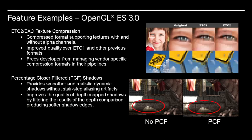Let's cover some practical examples for version 3 of the OpenGL ES API. First, it added ETC2 and EAC texture compression — a compressed format supporting textures with and without alpha channels. It has improved quality over ETC1 and other formats, and is a standard texture compression method that makes development easier on Android. You are no longer required to use vendor-specific compression formats in your pipelines. It also added percentage closer filtered shadows, which provide smoother and more realistic dynamic shadows while filtering out aliasing artifacts, improving the quality of depth map shadows by filtering the results of the depth comparison to produce softer shadow edges.